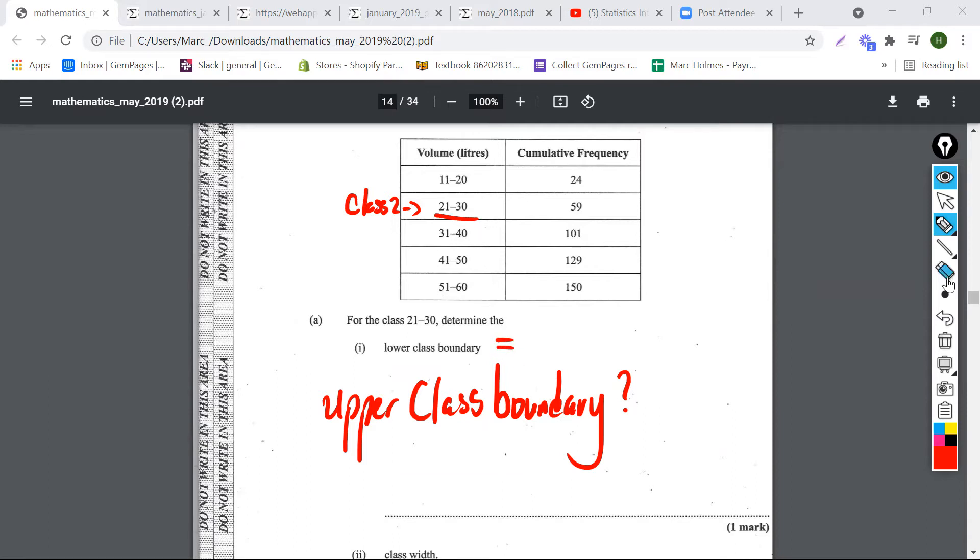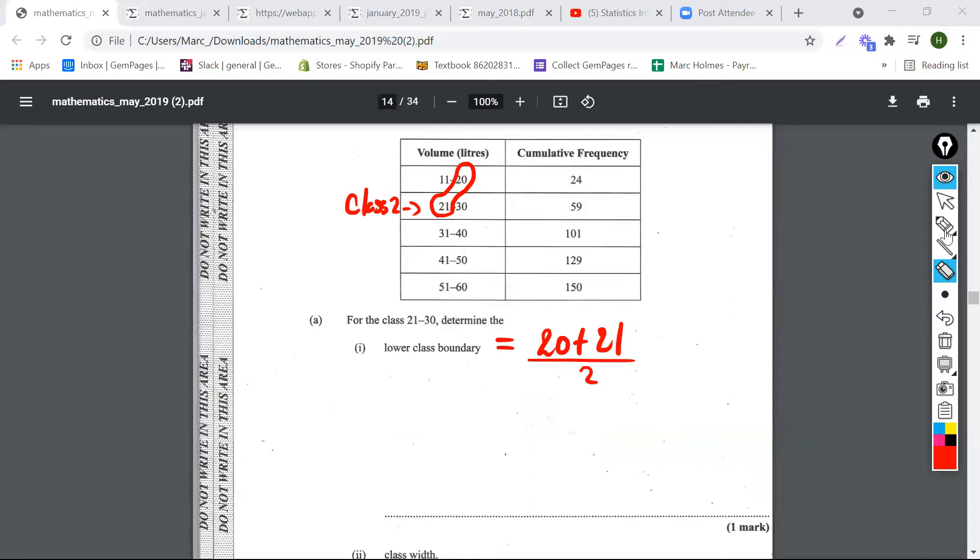So basically, the lower class boundary is the 21 plus the 20 here. So it's going to be 20 plus 21 divided by 2. That's the lower class boundary. So it's kind of simple. Let me just show you what I mean.